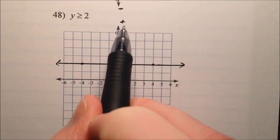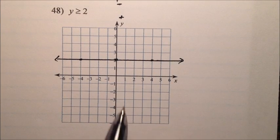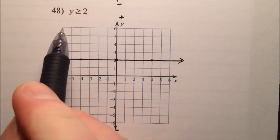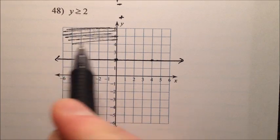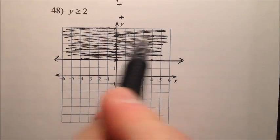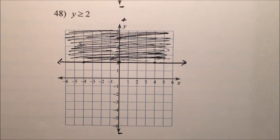So here's the high stuff, the big stuff, the positive stuff, and here's the small stuff, the negative stuff. We want y to be bigger, so we want it above that 2. So we'll shade this whole thing. So everything above this horizontal line is going to be our solution region. So there's the answer to number 48.